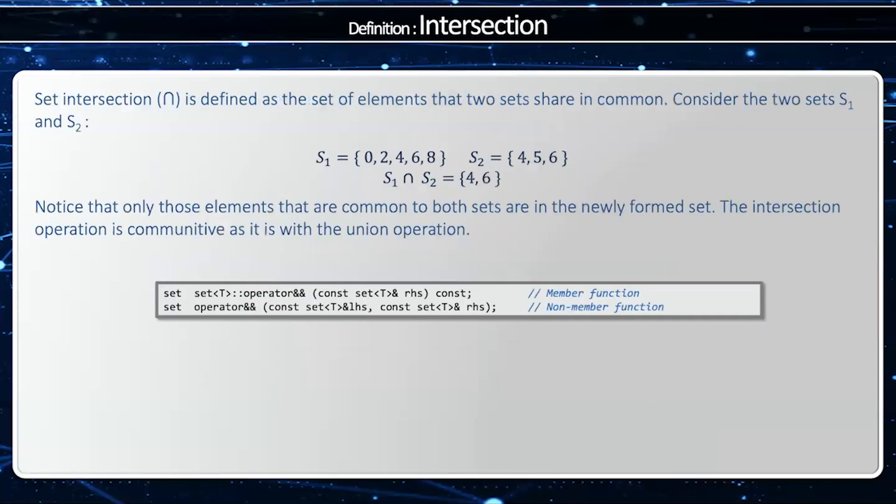Now, the intersection is all the elements that both share in common. And this is represented with the upside down U. So if S1 is 0, 2, 4, 6, 8, and S2 is 4, 5, 6, the intersection is going to be 4 and 6 because those are the only elements that are in common for both S1 and S2.